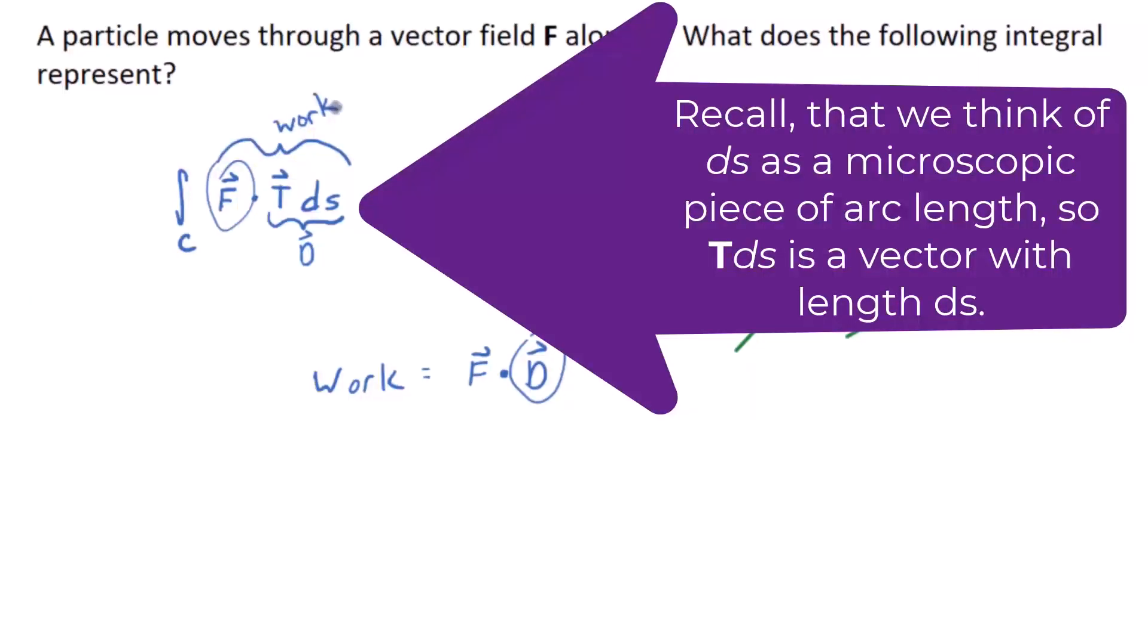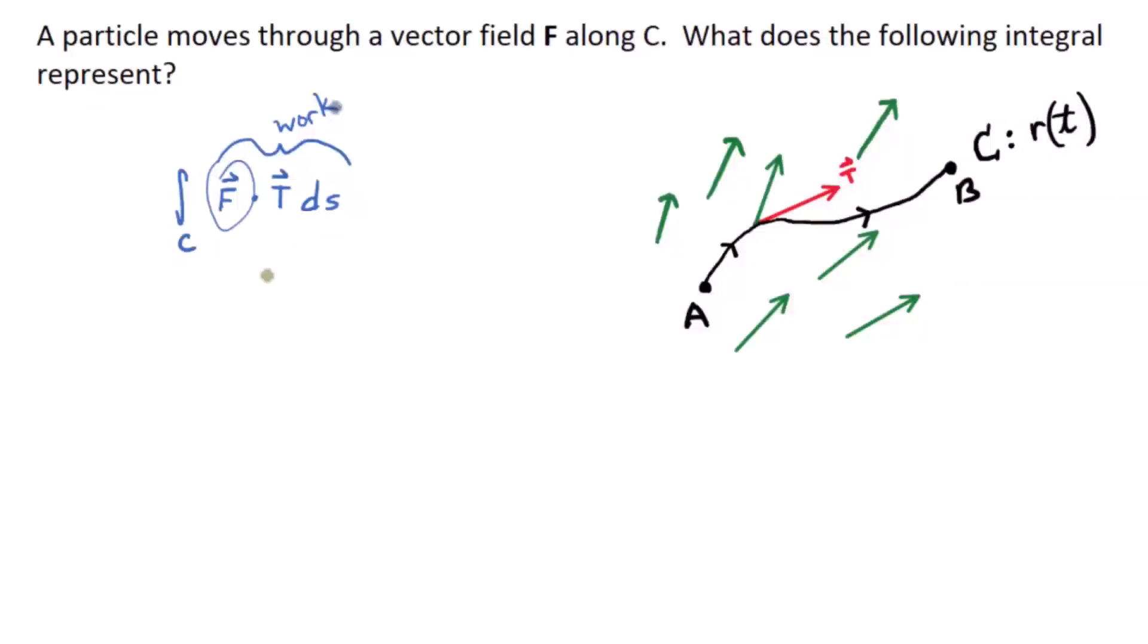So I would call F dot TDS, I would call that a work element. And what's doing the work here? The vector field, the force. The force is doing the work. So when I say work element, I mean an infinitesimally small piece of work done on an interval associated with that piece of the curve right there.